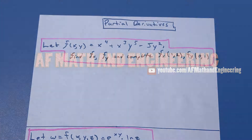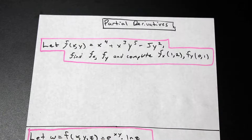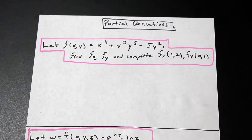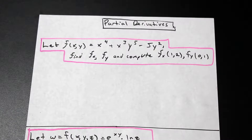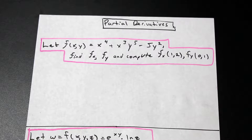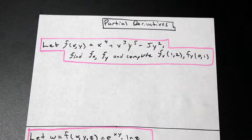Hi guys, welcome back. Fred here at Math and Engineering. We're going to do two example problems on partial derivatives. This is a calculus 2 topic, and partial derivatives come up a lot in different engineering applications, including civil engineering. They're not hard — after these two examples you should know how to do it. Let's take a look at the first one.